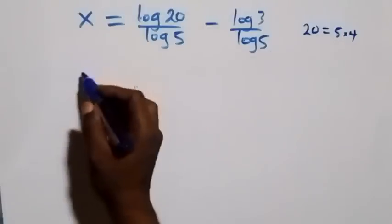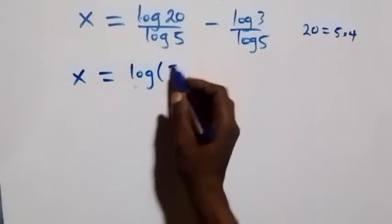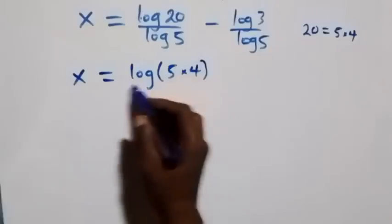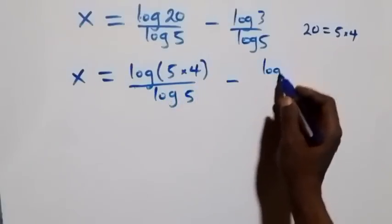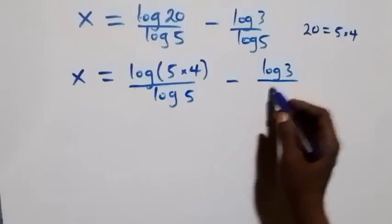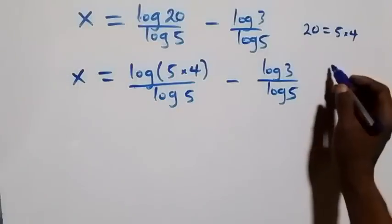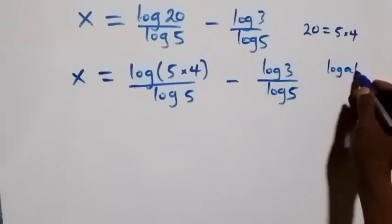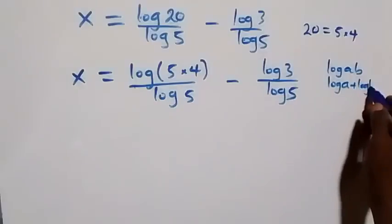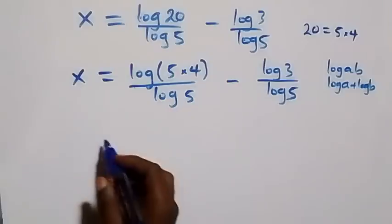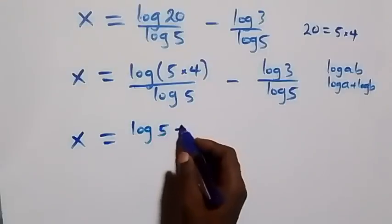Writing 20 as 5 times 4, and applying the law of logarithms where log a times b can be written as log a plus log b, what we have here becomes x equals to log 5 plus log 4, all over log 5, minus log 3 over log 5.